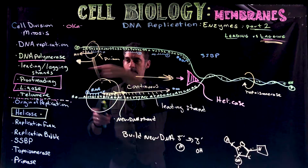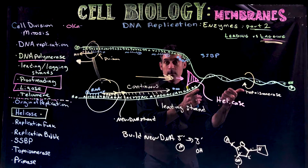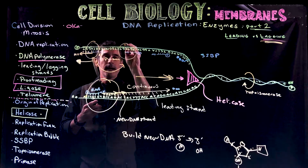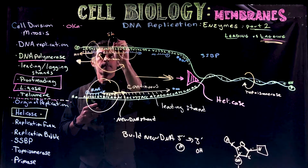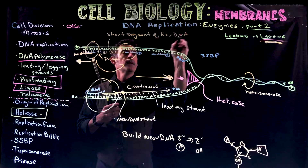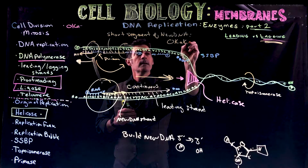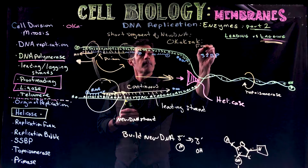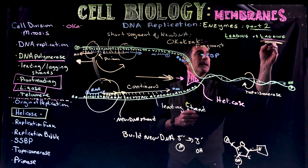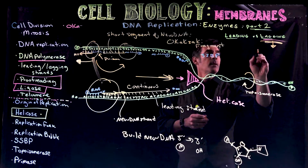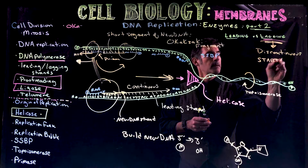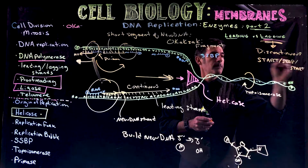For the other polymerase, there's a huge problem. It needs to be working in this direction, yet it's going to be pulled or moved backwards. What's going to happen is it's going to keep detaching — it's going to stop, disconnect, reconnect, then work and build a short segment of DNA. This short segment of new DNA has a special term: it's called an Okazaki fragment.